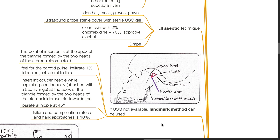If ultrasound is not available, the landmark method can be used. The point of insertion is at the apex of a triangle formed by the two heads of the sternocleidomastoid — the sternal head and the clavicular head. Feel for the carotid pulse and infiltrate 1% lidocaine just lateral to this. Insert the introducer needle while aspirating continuously at the apex of the triangle, directed towards the ipsilateral nipple at a 45-degree angle. The failure and complication rate of the landmark approach is approximately 10%.